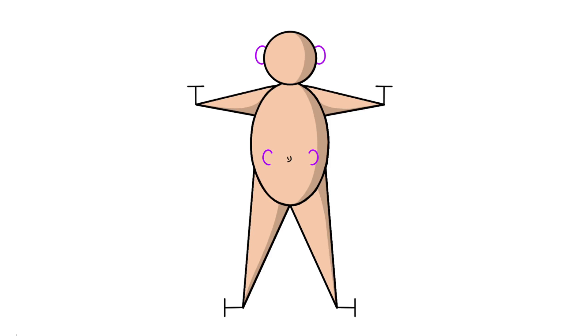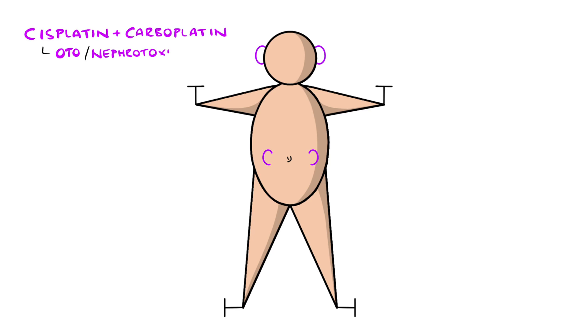Next we add C-shapes to the ears and kidneys, to represent ototoxicity and nephrotoxicity from cisplatin and carboplatin.